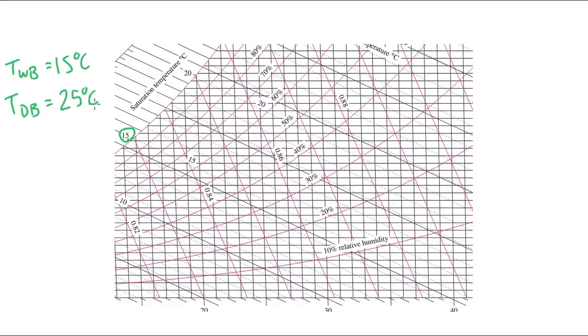And we want to find some other property. Let's say we want to find the relative humidity. Well, we start at this 15. This black dashed line is a constant wet bulb temperature. So we'll draw this line in as best as we can. Maybe if you have a ruler, that'll make it easier for you than it is for me.